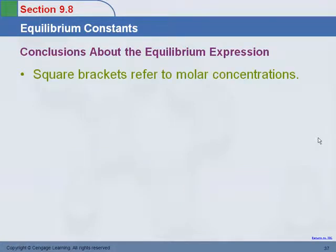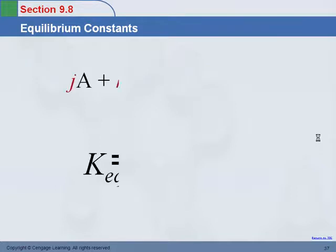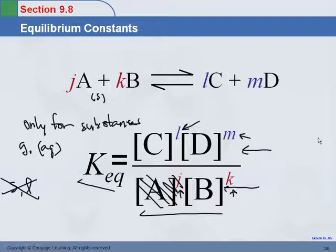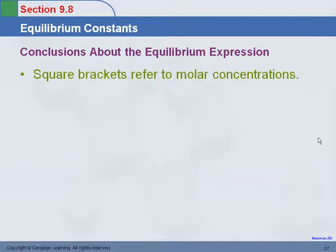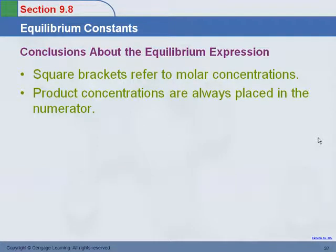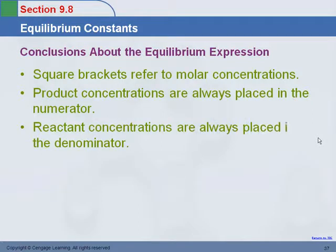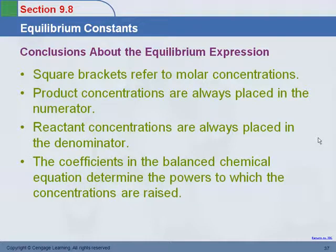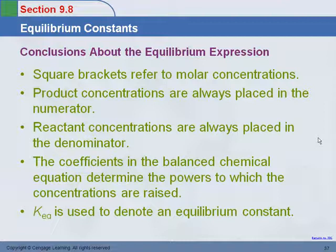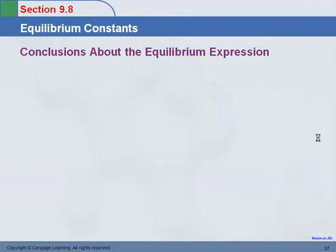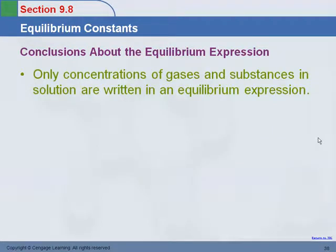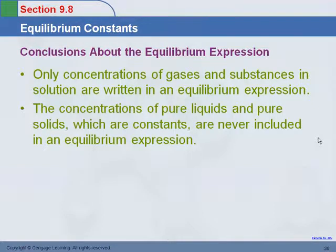The equilibrium constant KEQ is written as the concentrations of products raised to their coefficients as powers, divided by concentrations of reactants raised to their coefficients as powers. Only gases and aqueous substances are included — pure solids and liquids are never written in the equilibrium constant expression. Square brackets denote molarity. Products always go in the numerator; reactants in the denominator.